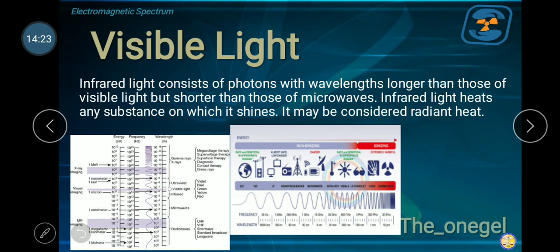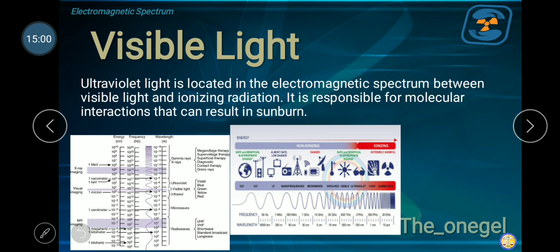When we say infrared light, this consists of photons with wavelengths longer than those of visible light, but shorter than those of microwaves. Infrared light hits any substance on which it shines, so it may be considered radiant heat. Do some research on day-to-day gadgets or equipment that use infrared radiation.